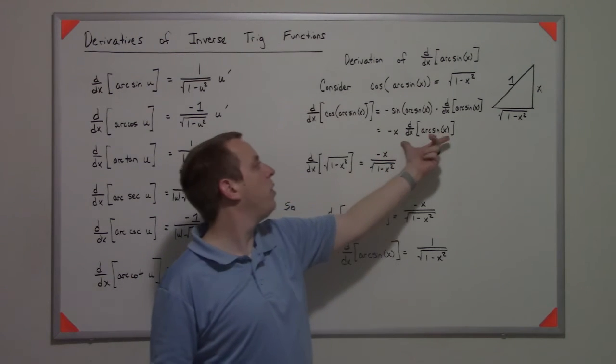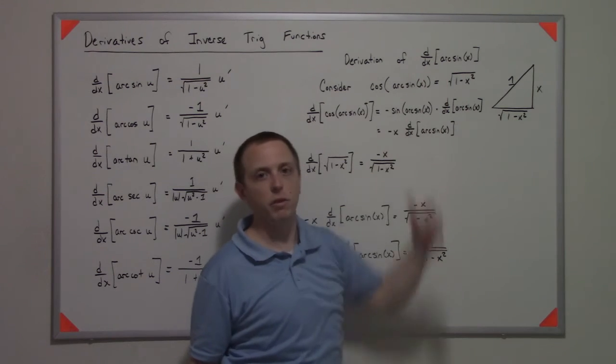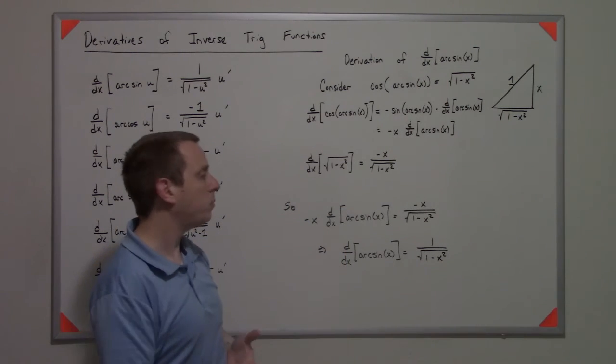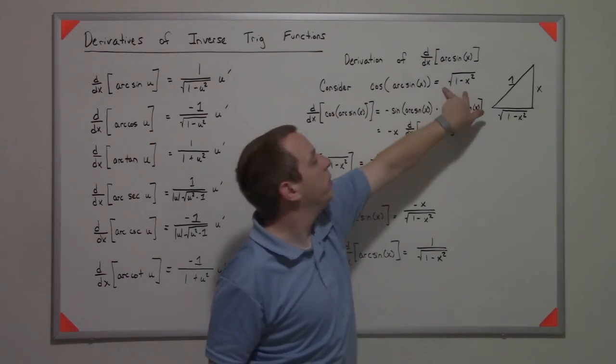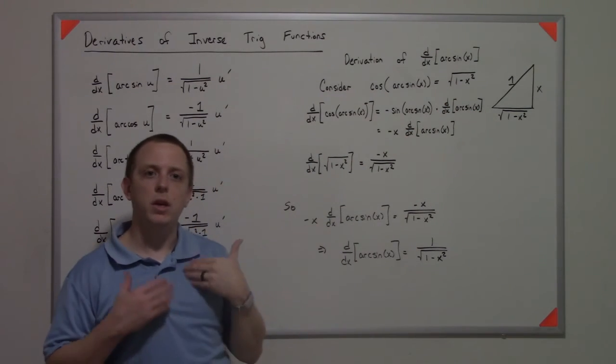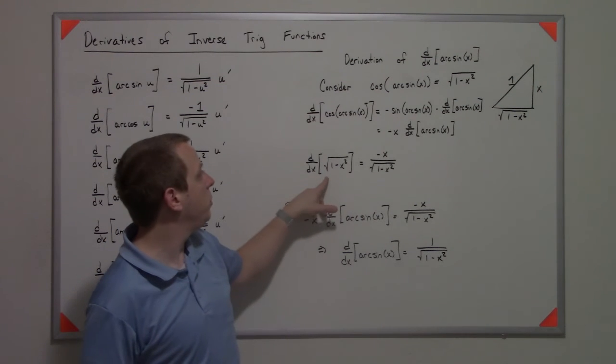So now we have negative x times the derivative of the thing we want—the derivative of arc sine of x. Now we've taken the derivative of this half, and we need to take the derivative of that half.